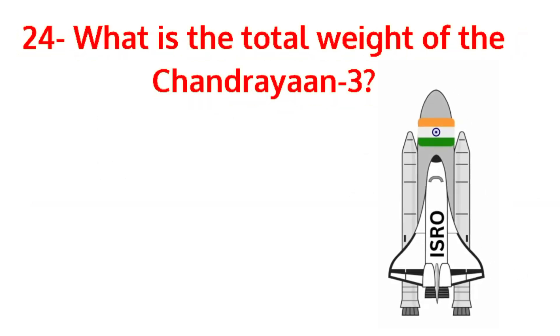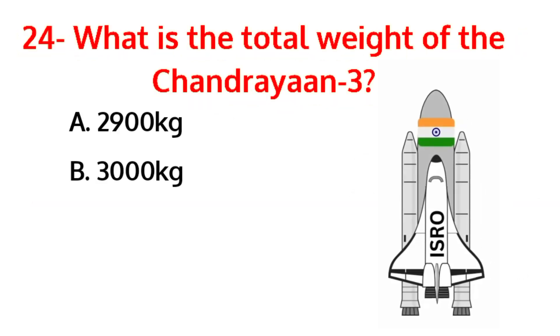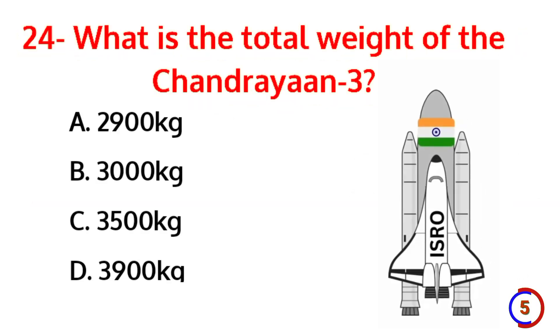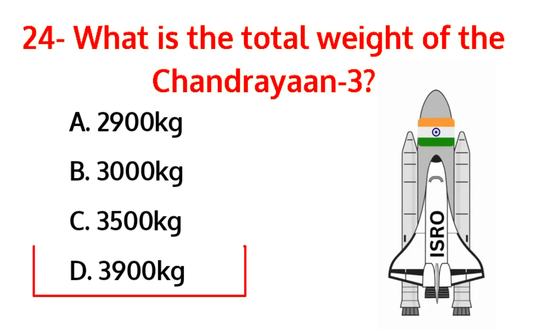What is the total weight of Chandrayaan-3? The correct answer is option D, 3900 kilograms.